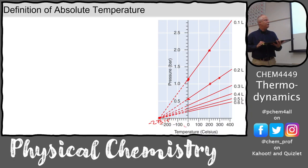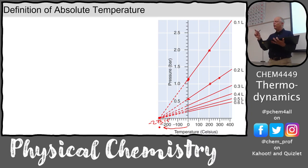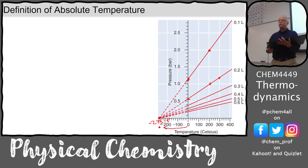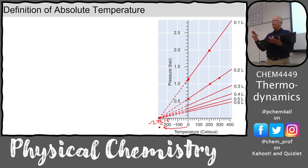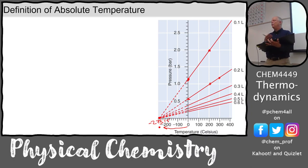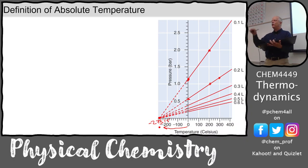Instead of dealing with negative temperatures, we just move zero over to that point — that's why Celsius and Kelvin have the same gradient, the same spacing between tick marks. We just move the intercept so there are no negative temperatures. You convert between them by adding or subtracting 273.15. Nature doesn't consider water special, but there is an absolute zero in nature that we can't go below. You can do the same extrapolation with pressure in a stainless steel container.